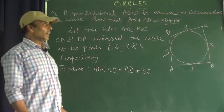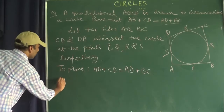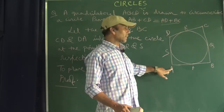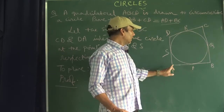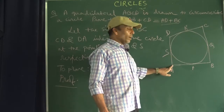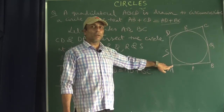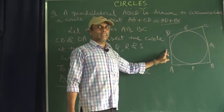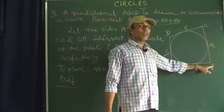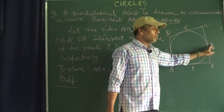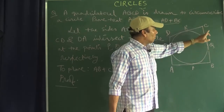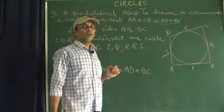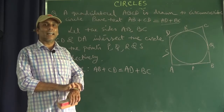To prove: AB plus CD equals AD plus BC. No construction is required; we can start the proof directly. We know that tangents drawn from an external point to a circle are equal in length. For external point A, AP equals AS; for external point B, BP equals BQ.